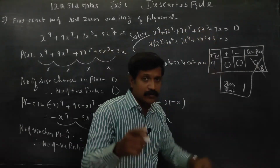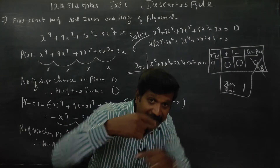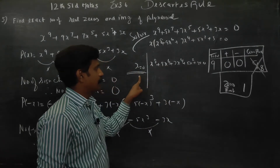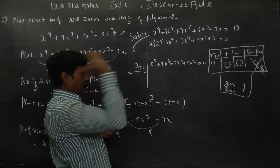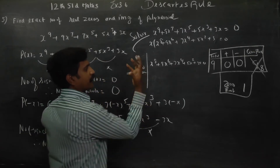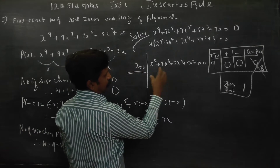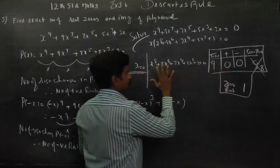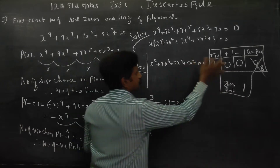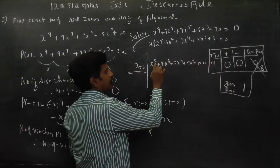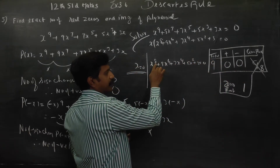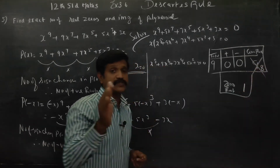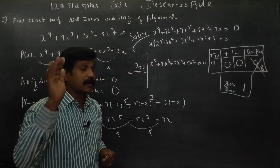After extracting the zero root, we analyze the remaining core polynomial of degree 8. In this core polynomial, there are 0 positive roots and 0 negative roots. Since the degree is 8, and the maximum number of complex roots is 8, all 8 remaining roots are complex roots.